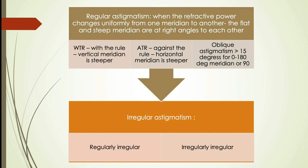Irregular astigmatism is further subdivided into regularly irregular and irregular irregular, where the two meridians are not at right angles to each other. In irregularly irregular astigmatism, which is quite rare, there are multiple curvatures occurring within a single meridian. Irregular astigmatism usually results from scarring or opacification of the cornea, as well as in corneal diseases like keratoconus. Generally speaking, regular astigmatism is the most common type.